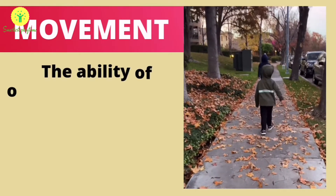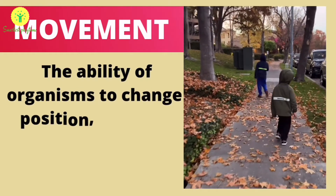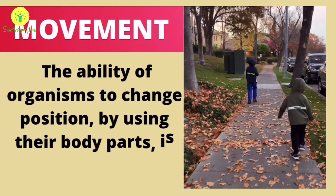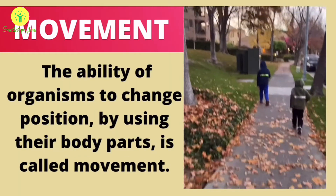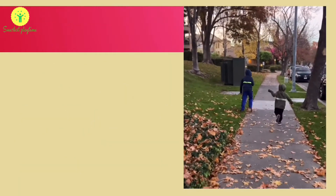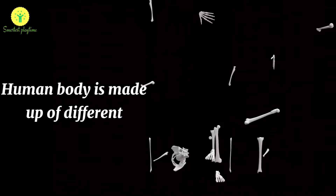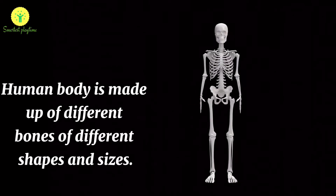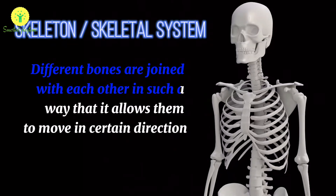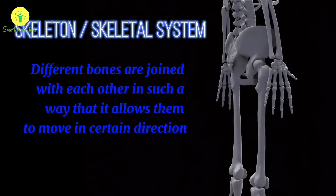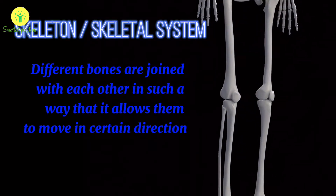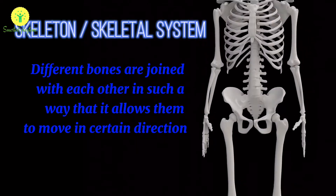Living beings are able to change their position. The ability of an organism to change its position by moving different body parts is called movement. The human body is made up of different bones of different sizes and shapes. These bones join to each other and form a framework called skeleton or skeletal system, which helps in bringing about movements.